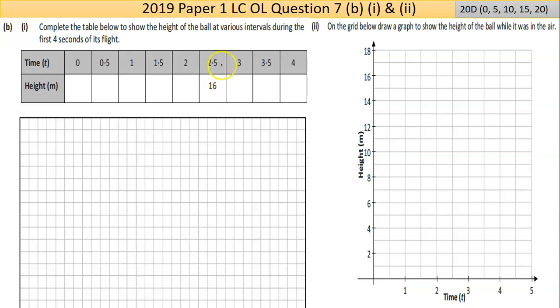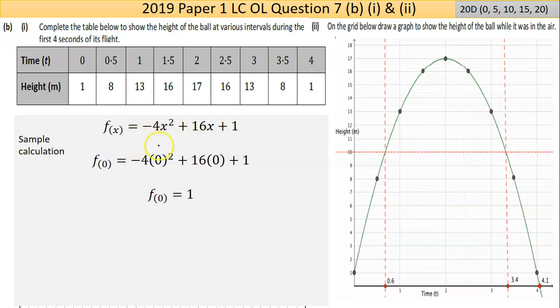We've done a question like this in a previous paper. You're just basically using your function and plugging in your x value and getting your output, or your y value. So I've done a sample calculation here. When 0 goes in, 1 comes out. When a half goes in, if I replace that with 0.5 and put it to the calculator, I should get 8.